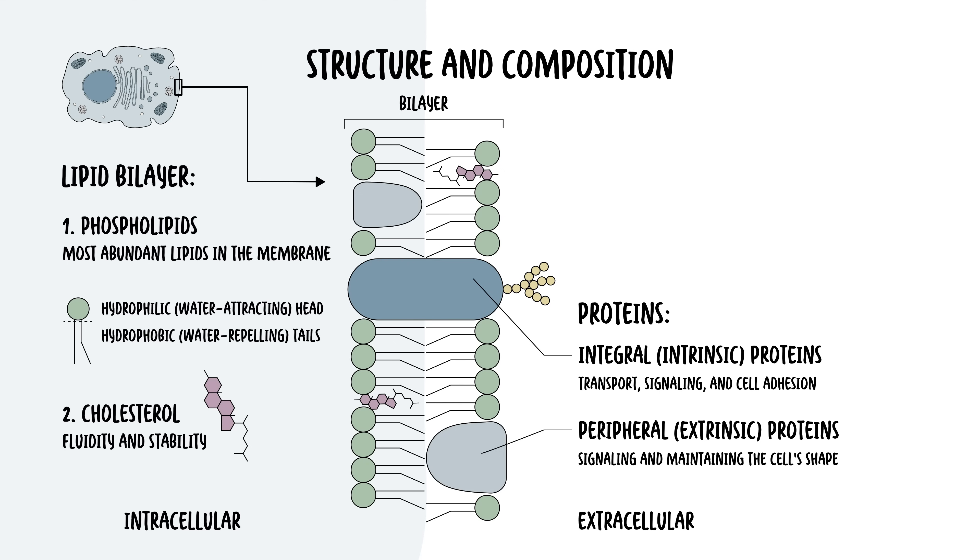Finally, you can find carbohydrates on the cell membrane. These include glycoproteins and glycolipids, which are carbohydrate chains covalently attached to proteins and lipids respectively, and they form the glycocalyx on the cell surface. This layer is involved in cell recognition, protection, and interaction with the environment. It interacts with the connective tissue, like the collagen that you find outside the cell.